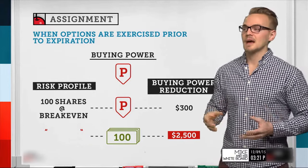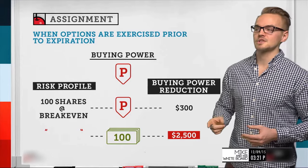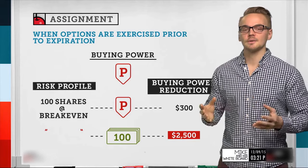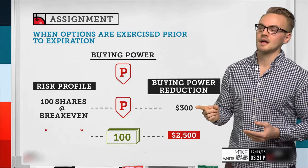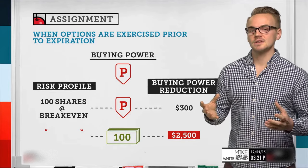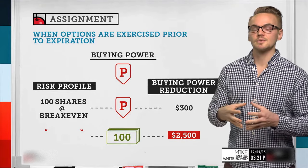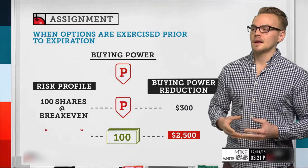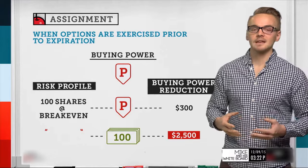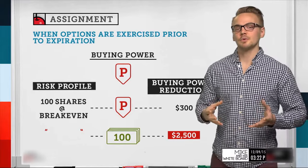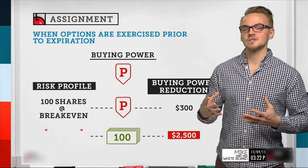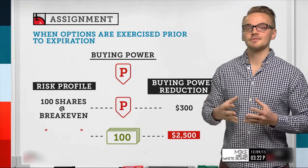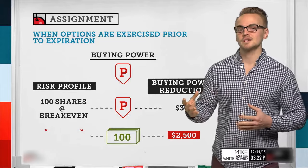The big takeaway: with naked options, the risk profile doesn't change when assigned, but the buying power reduction does. If I'm trading options in a margin account with only $300 of buying power reduction and then I'm assigned 100 shares, that buying power reduction can increase nearly ten times. It's really important to be aware of situations where we might get assigned, so we have the cash available or the means to close the trade right away.